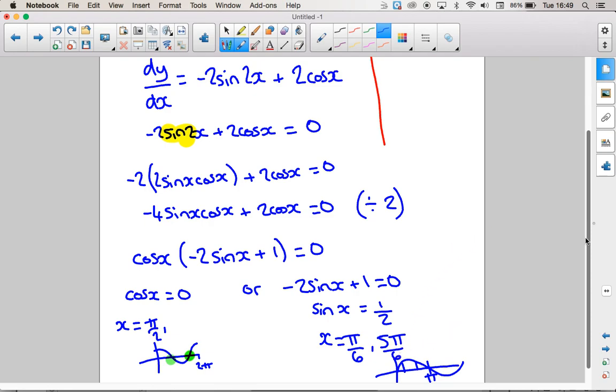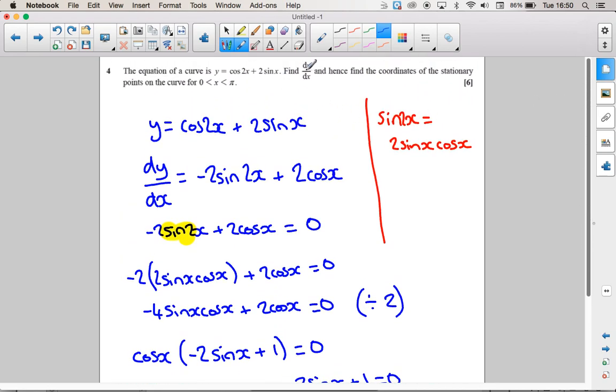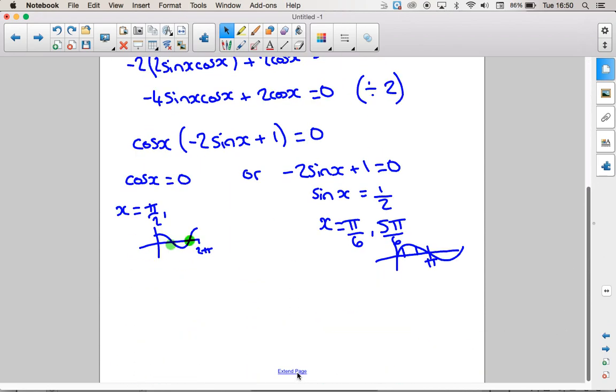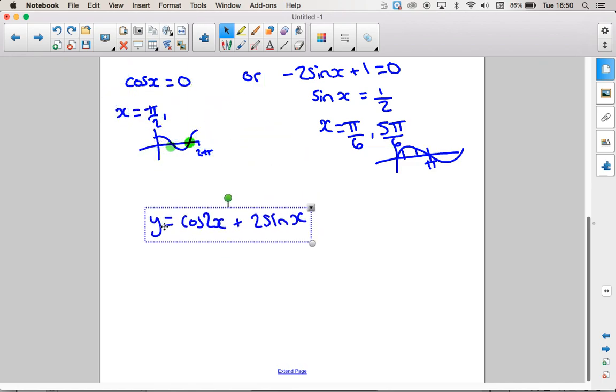So there is 3 stationary points between 0 and pi from this equation. It wants to find the full coordinates. So we're now going to have to go back and work out the full coordinates, putting them into this equation here. But make sure you've got all 3. You might not have all 3 if you divided by cos x. You would lose this solution here.